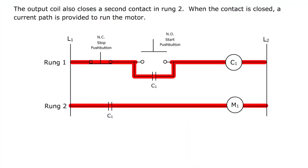The output coil also closes a second contact in rung 2. When the contact is closed, a current path is provided to run the motor.